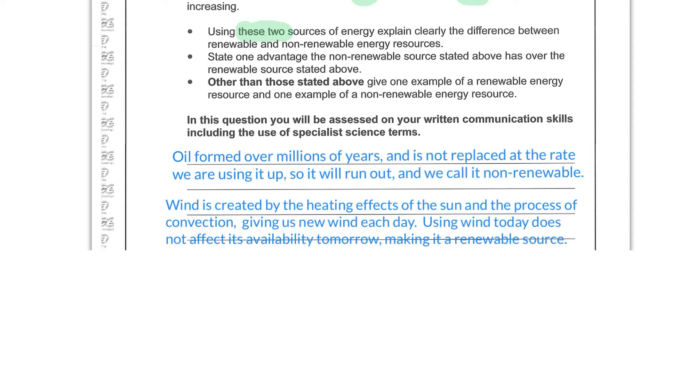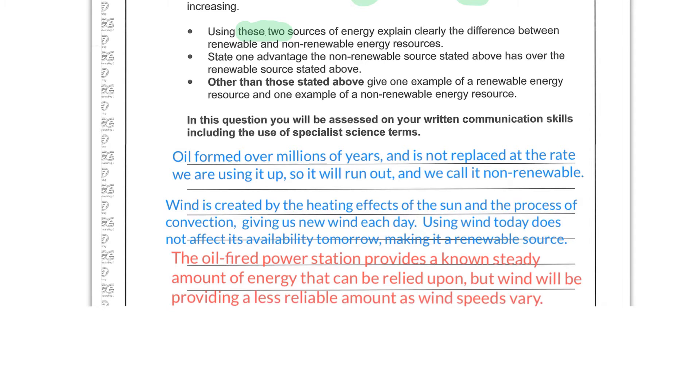State one advantage the non-renewable source stated above has over the renewable source stated above. So what oil has going for it is that the power station running on oil has a guaranteed amount, a reliable amount of energy that it will produce, but wind doesn't. The oil-fired station provides a steady amount of energy that can be relied upon, but the wind will be providing a less reliable amount because the wind speeds would vary so much.